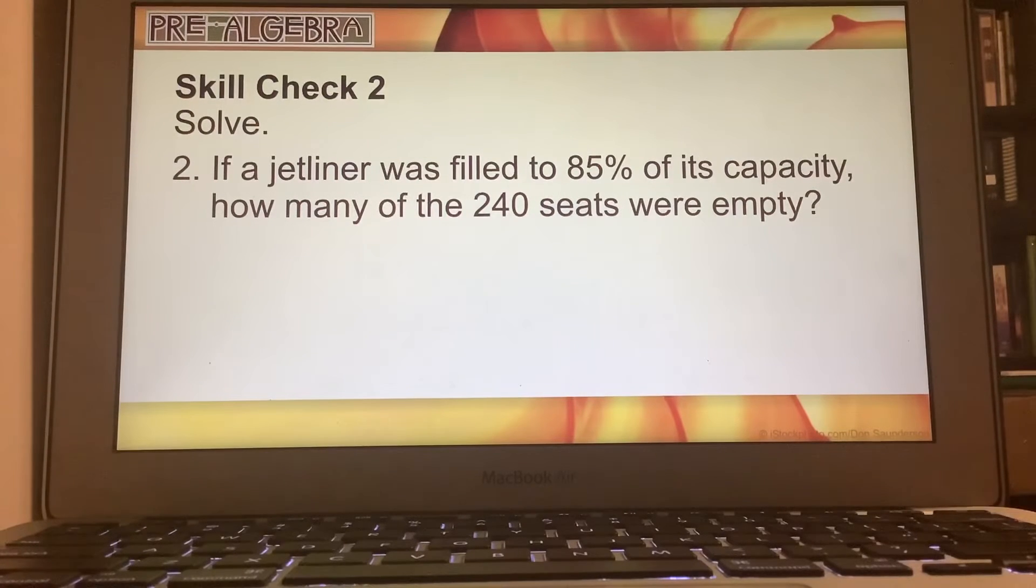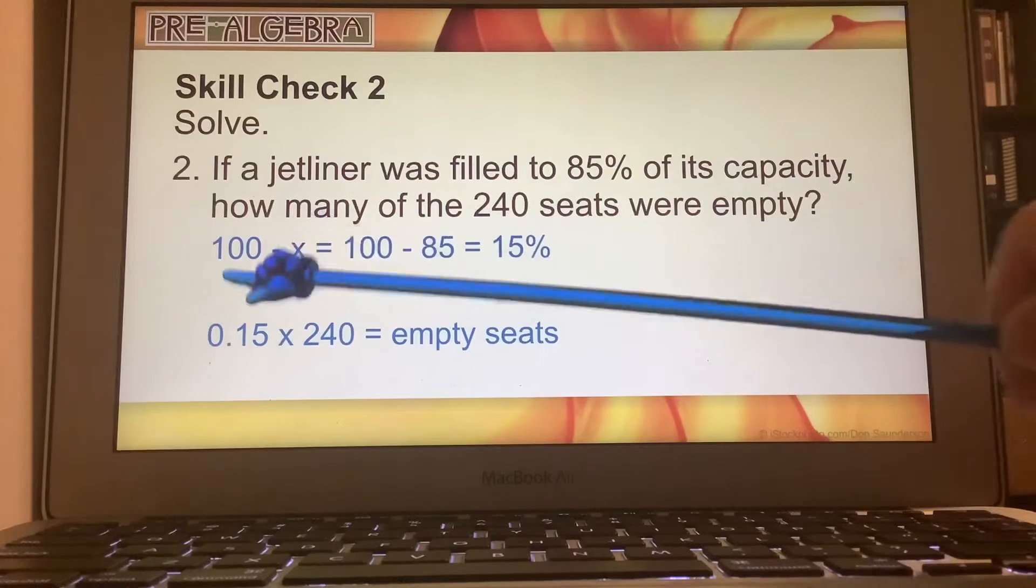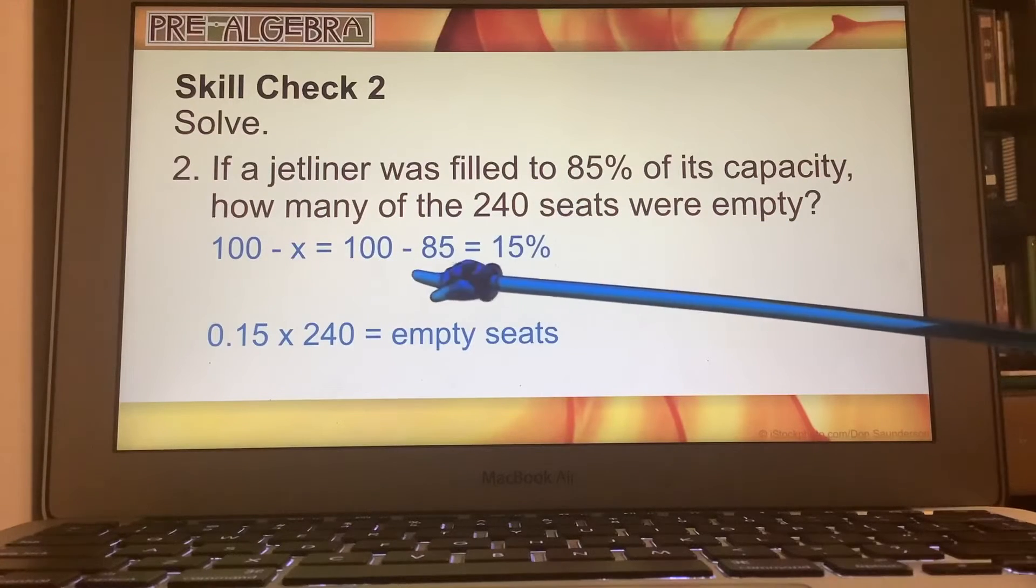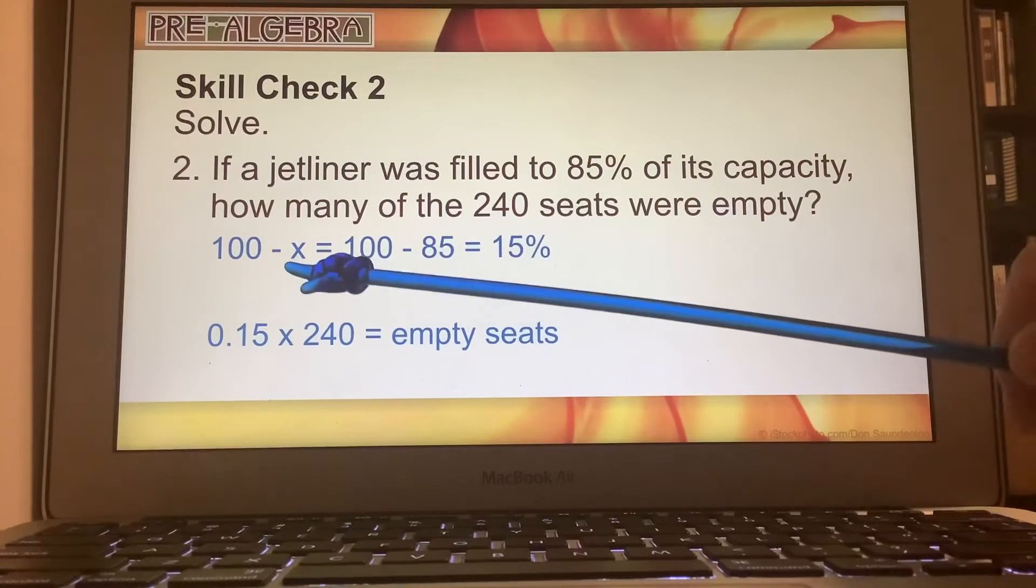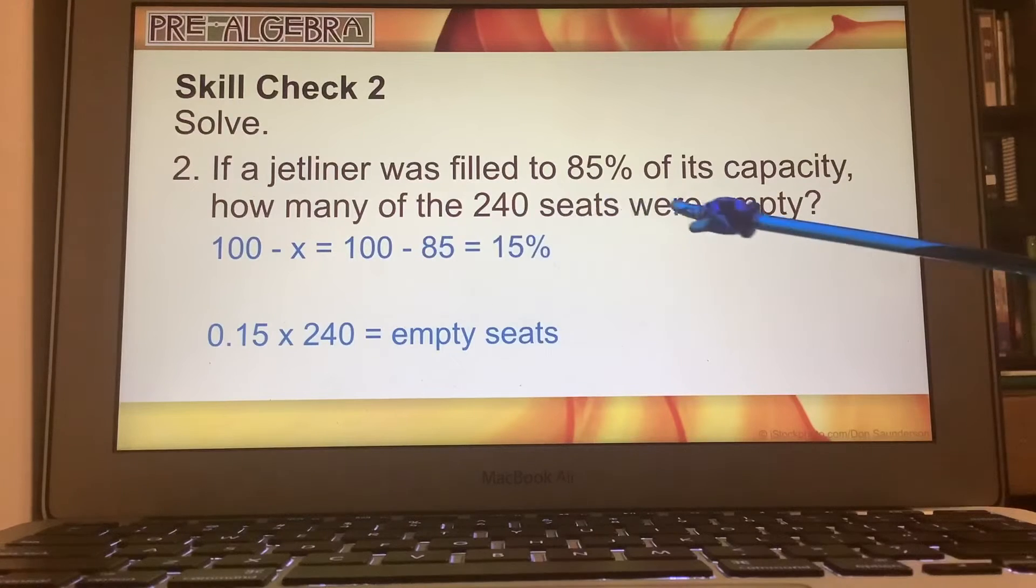We have 85% was filled, but then we look at the question, how many of the 240 seats were empty? So that's the opposite of the amount that was filled. So 85% here, we subtract that from 100 because that's a decrease or how many seats were empty.